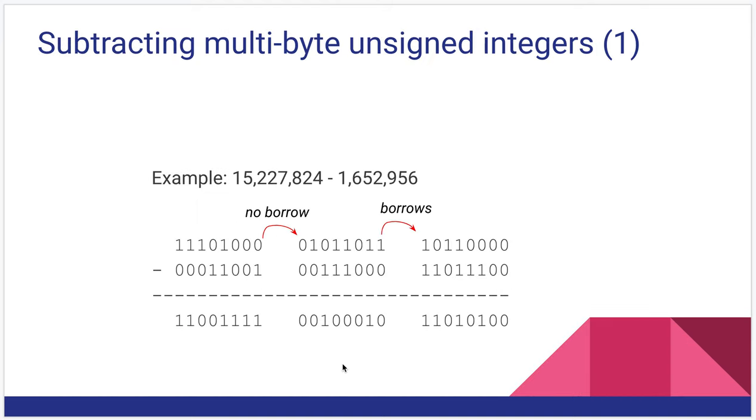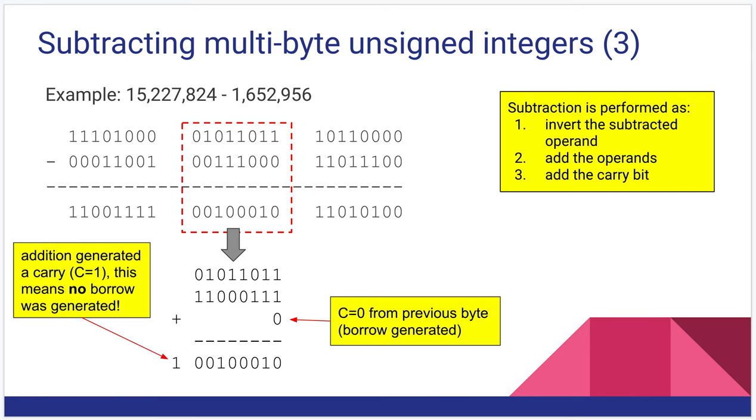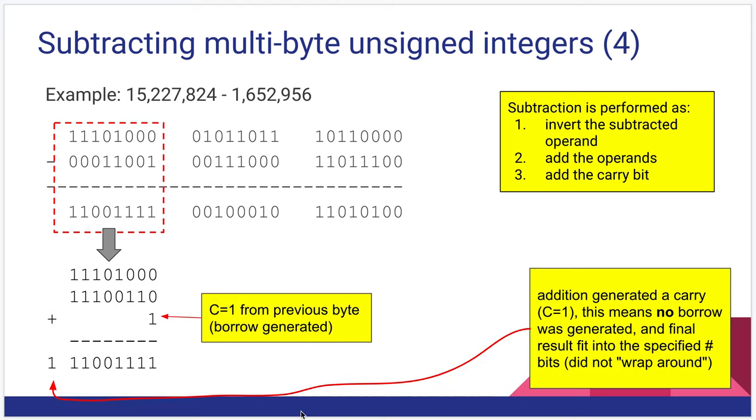But that will translate into a borrow of one. So going to the next slide. Once again, we take the first operand, add it to the inverse of the second operand, plus the carry. We do that, we get this result which generates a carry of one. That means no borrow was generated. And then we move to the final byte, our highest byte. To subtract, we take the first operand, add the inverse of the second operand to it, and then add in the carry.